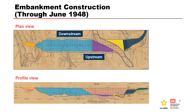Worcester Dam was authorized in 1938, but the notice to proceed for construction was not received until 1946. Most of the embankment and outlet works were constructed over about two years, shown here in plan and profile. This shows the construction accomplished through June 1948.